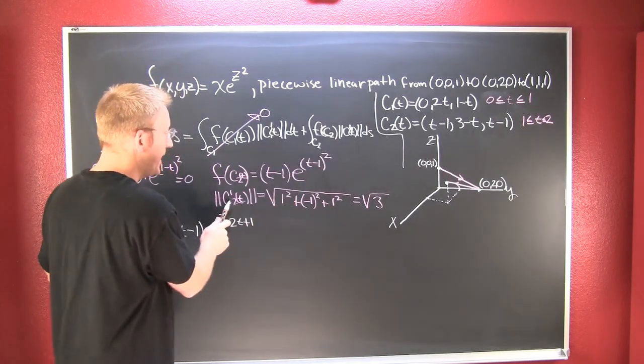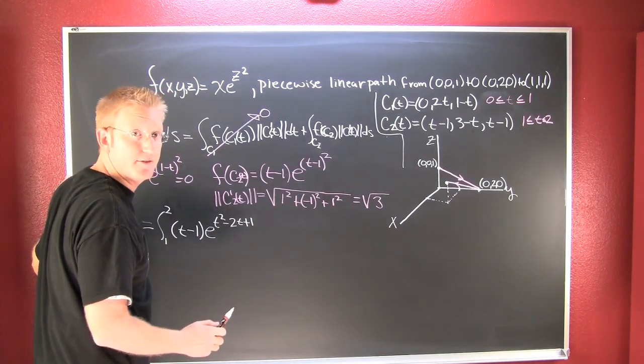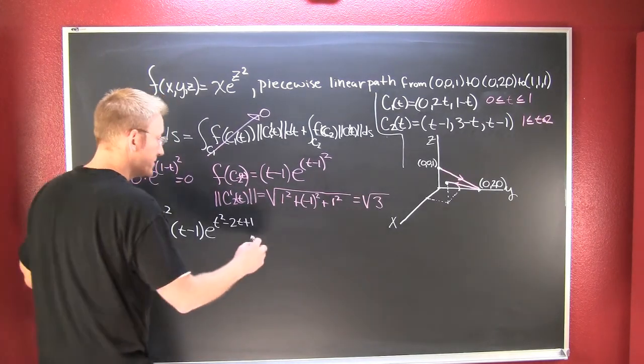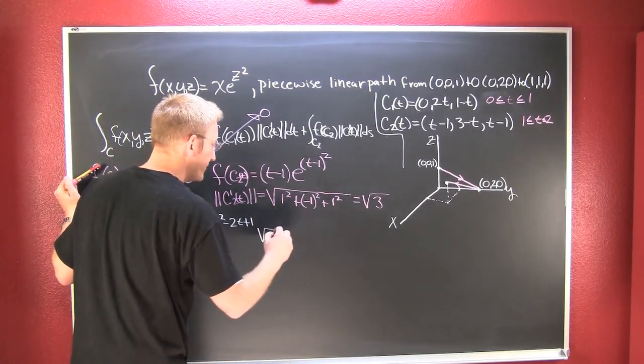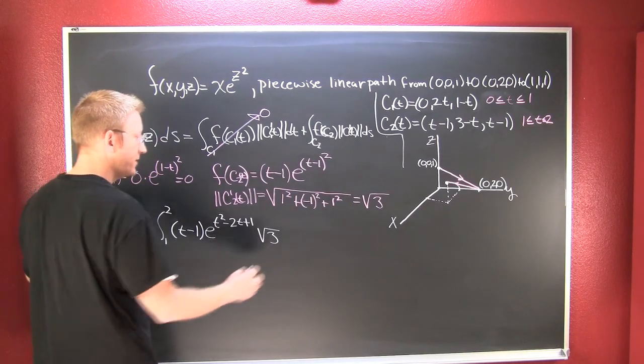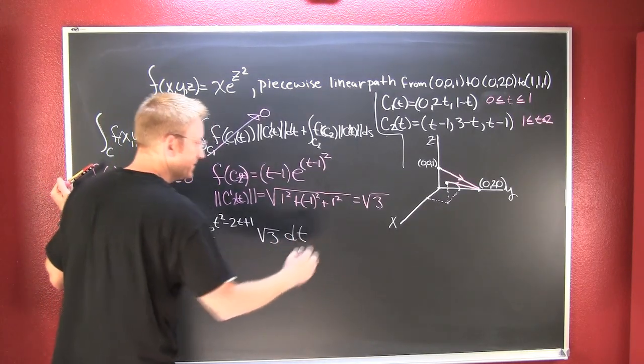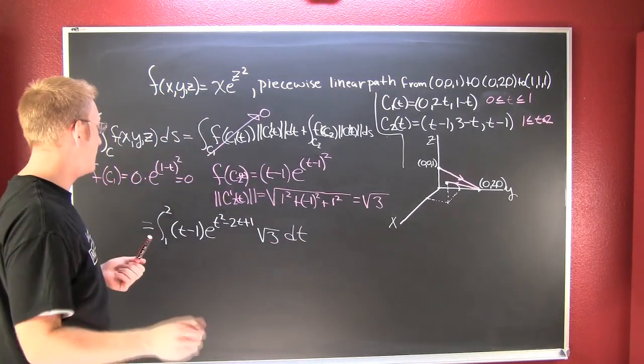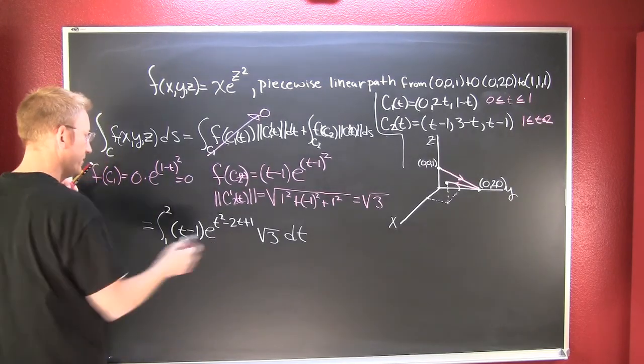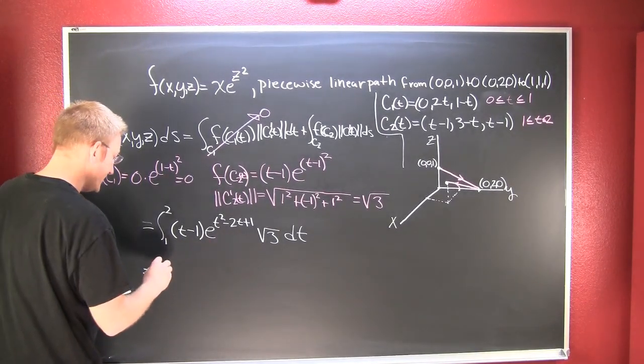Then I need to multiply that by the magnitude of the derivative of the second path, so this is going to be the square root of 3 dt. I'm almost done. Let me pass that root 3 out front.